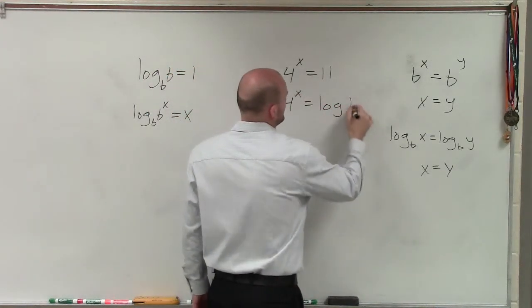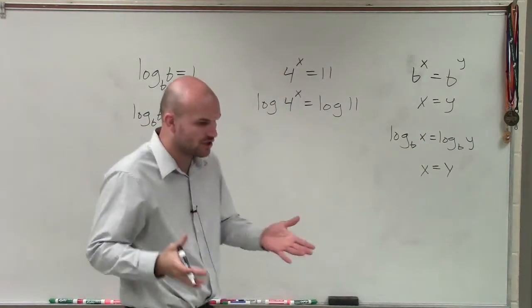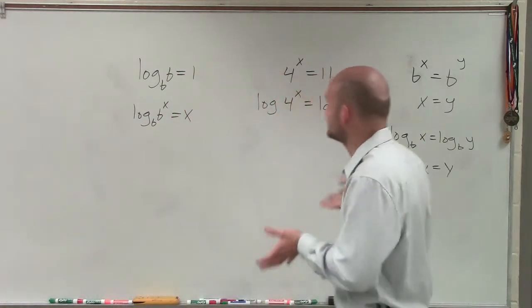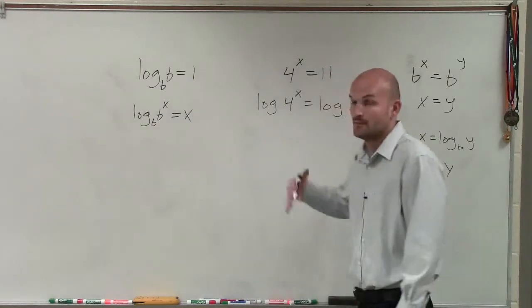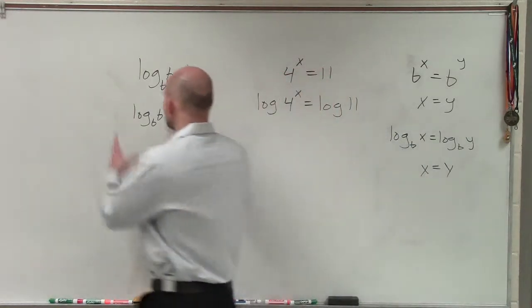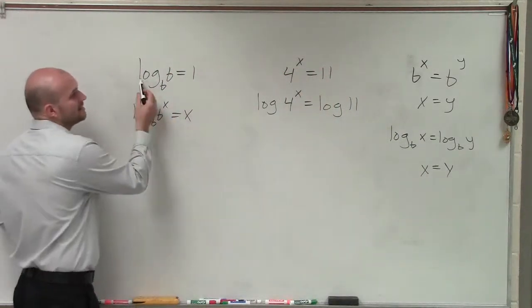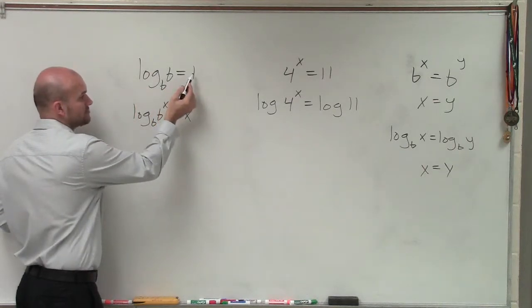Now, where it gets a little tricky and what you need to understand is, when we're taking a logarithm, we have a base of a logarithm. And we need to decide which base of a logarithm we're going to choose. So I go back to my properties of logarithms, and I understand that log base b of b equals 1.